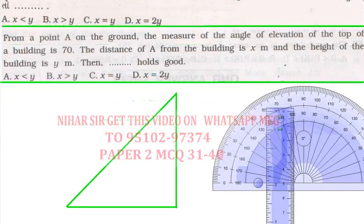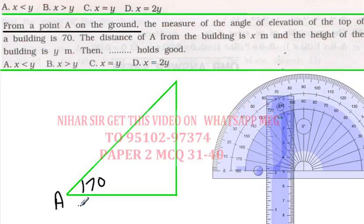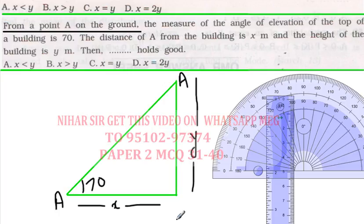Next MCQ: from point A on the ground, the measure of the angle of elevation of the top of a building is 70°. Point A is x meters away from the building, and the height of the building is y meters.